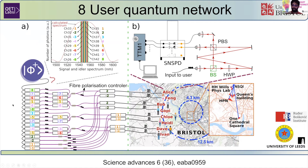This is an example of how a physical system would look in an eight-user network being implemented across the city of Bristol. It essentially relies on wavelength division multiplexing of an entangled photon pair source, which has a broad bandwidth that we split into several ITU channels. Due to conservation of energy in the down-conversion process that creates these photon pairs inside the source, we have entanglement between fixed ITU channels only.